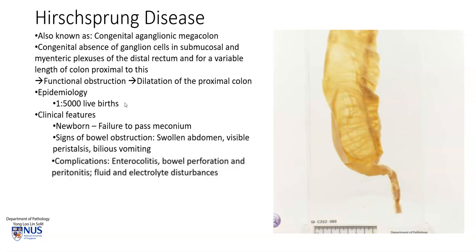It occurs in about 1 in 5,000 live births, and clinically the first sign is usually the failure to pass meconium in the newborn baby. There may also be other signs of bowel obstruction, such as swollen abdomen, peristalsis that you can actually see, and bilious vomiting. Some serious complications can occur, including enterocolitis, perforation, and fluid and electrolyte imbalances.